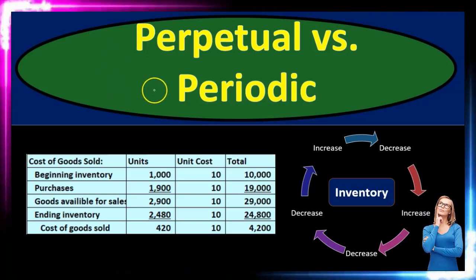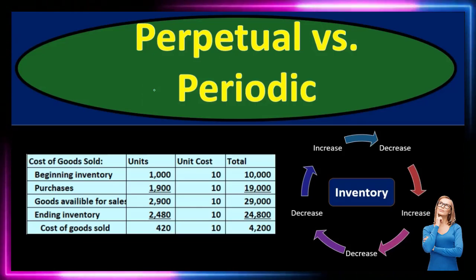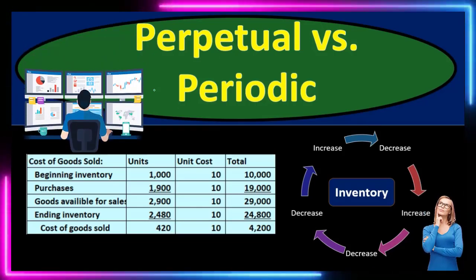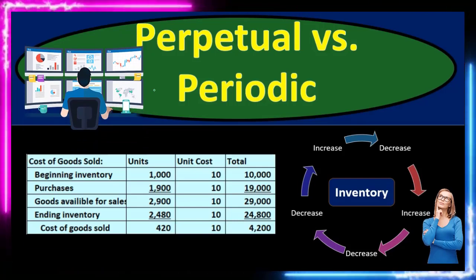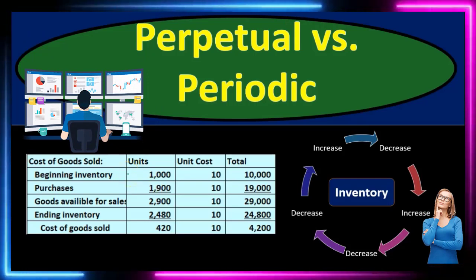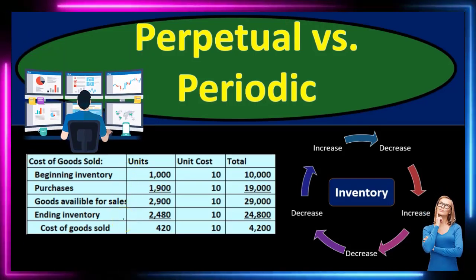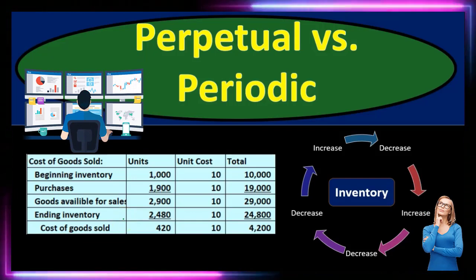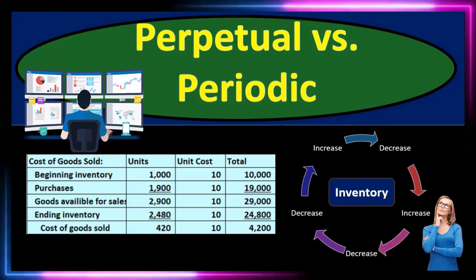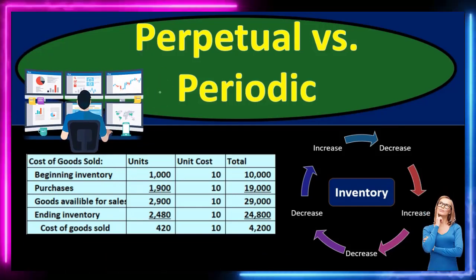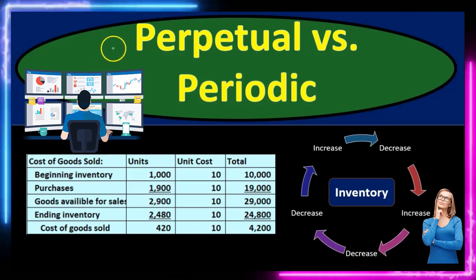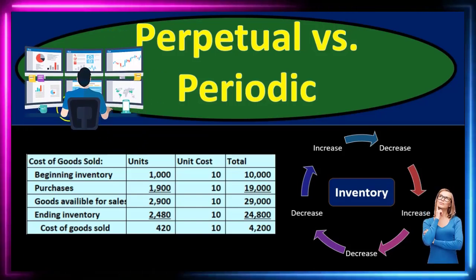The periodic system is used when we have a small or less sophisticated type of software or process, and it's useful to know for that reason. Also, the cost of goods calculation and the counting of ending inventory we use for a periodic system is something we will need to use for a perpetual system as well. The periodic system will be used when we have a less sophisticated system; the perpetual system when we have a more sophisticated system.